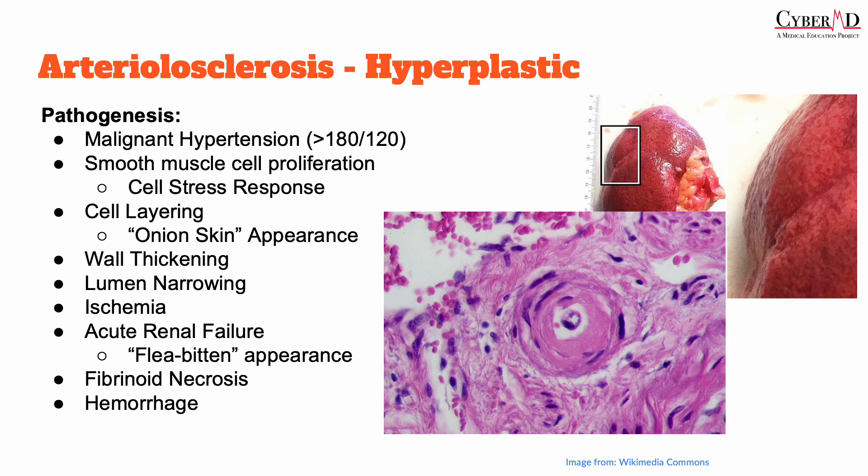Similar to hyaline arteriolosclerosis, the narrowing of the caliber of the vasculature can lead to end-organ ischemia or damage. The classic example of this end-organ ischemia is that it can lead to acute renal failure, in which the kidneys, when viewed grossly, would have a so-called flea-bitten appearance.